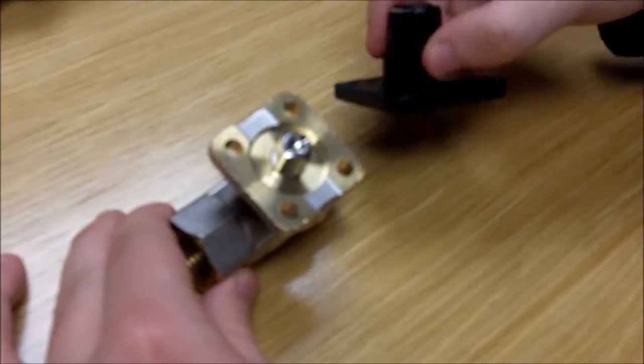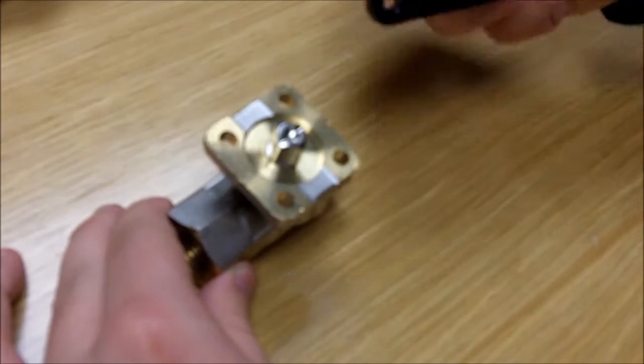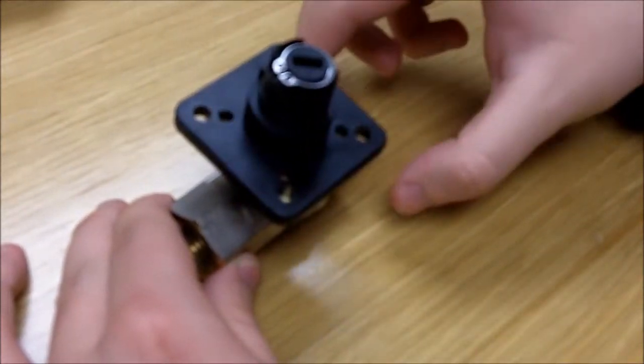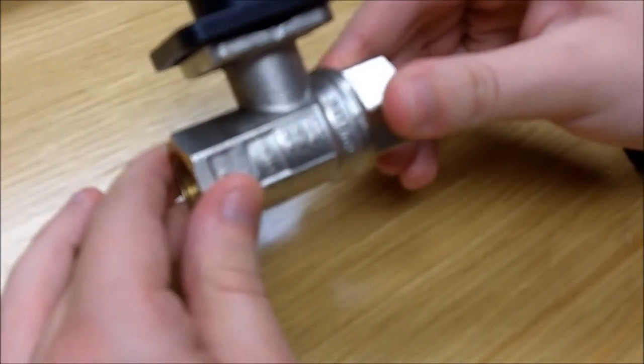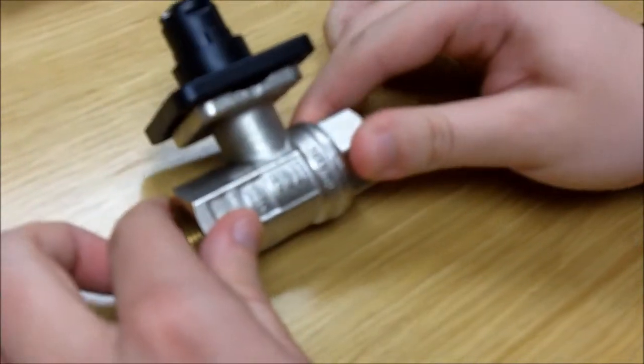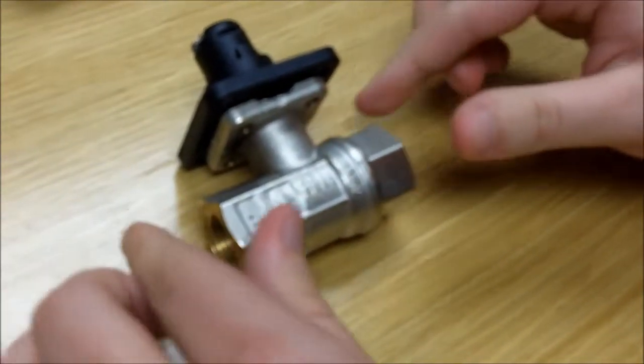The ISO adapter kit enables the use of valves with ISO 5211, FO5 or FO3 mounting pads. The kit is supplied complete with all screws and a reducer from 11mm to 9mm.